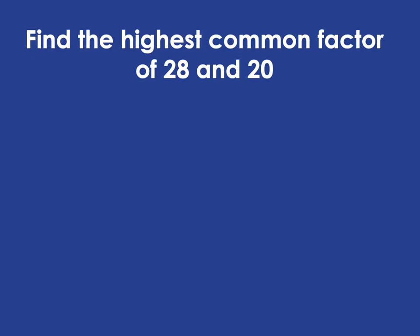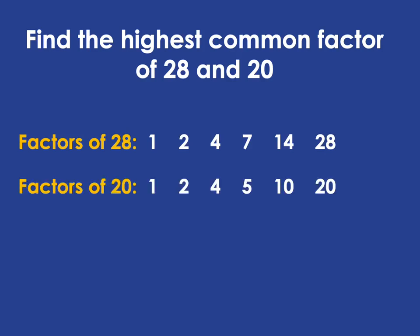If we just recall what we used to do when we found the highest common factor, for example if we were looking for the highest common factor of 28 and 20, we would write out all the factors of 28, those things that divide into 28 with no remainder, and the factors of 20, so those positive whole numbers that divide into 20 with no remainder.